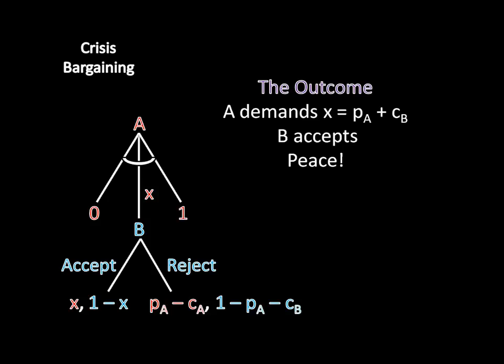And so our outcome here is pretty simple. A demands x equals pA plus cB. B accepts and peace prevails. So that is the conclusion of this crisis bargaining model. But a roadmap for the future here.